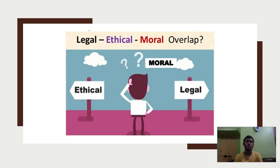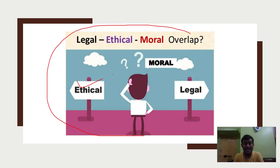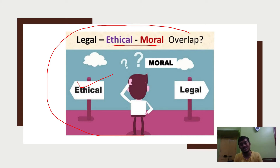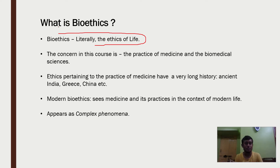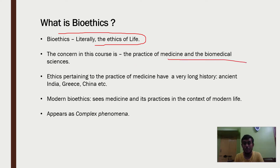Looking at this picture, you can see where ethics, legal, and moral overlap. Are all these terms the same? I'll discuss whether legal, ethical, or moral are the same or not. Bioethics literally means the ethics of life. Bioethics is different from what we call legal — laws which are meant for a country, nation, or state. Bioethics is something different from a law or a moral code.